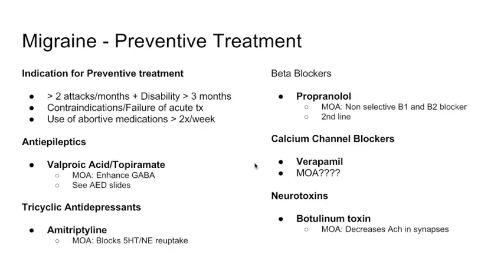Now we move to preventative treatment. After aborting the headache, we want to prevent it from becoming recurrent. The indications for preventative treatment are: more than two attacks per month with disability for about three months, contraindication or failure of acute treatment, or using the abortive medications more than twice a week.